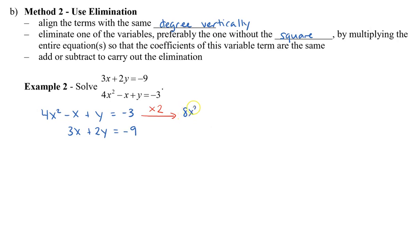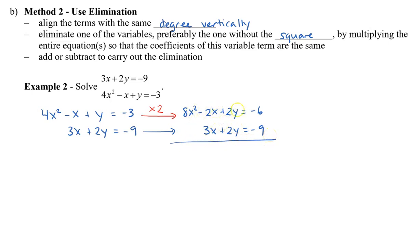When I do this, I get 8x squared minus 2x plus 2y equals negative 6. The second equation I don't have to multiply, so I bring it across. Be really careful and match everything up — x squareds, x's, y's, and constants. In order to eliminate my y's, if I add they'll remain, so I need to subtract. So 8x squared minus 0 is still 8x squared. Negative 2 minus 3 gives me negative 5x. 2y minus 2y is 0. And negative 6 minus negative 9 is positive 3.